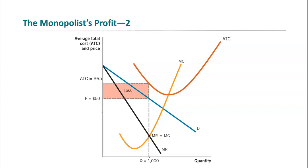If you're a monopolist earning losses, you probably won't stay in business long. This might be a product that won't continue to be sold by a private company. One option is to innovate and lower your costs. Or, as we'll see later, this is sometimes the case in a natural monopoly where costs are just really high, and so maybe the government takes over provision of the product or service because it's not profitable for a private company to provide.